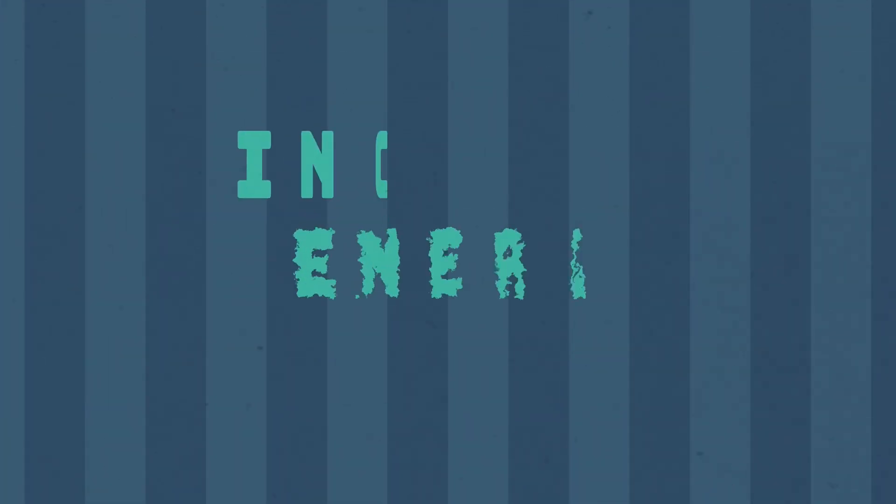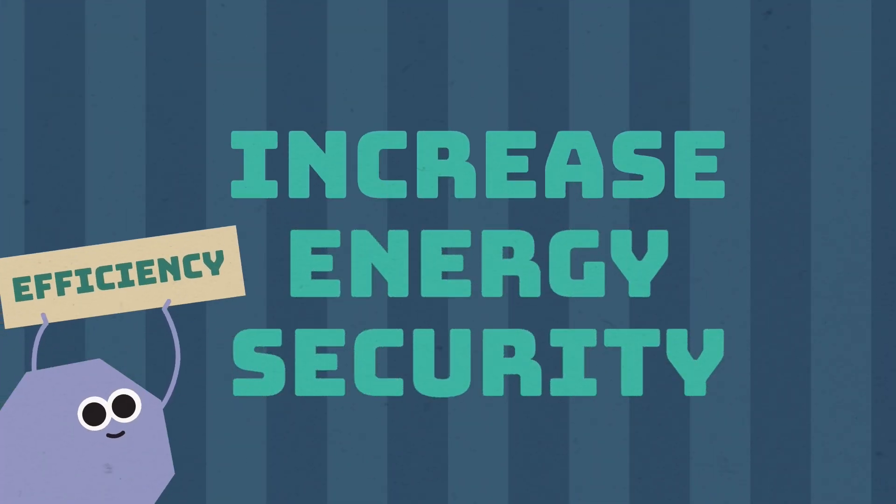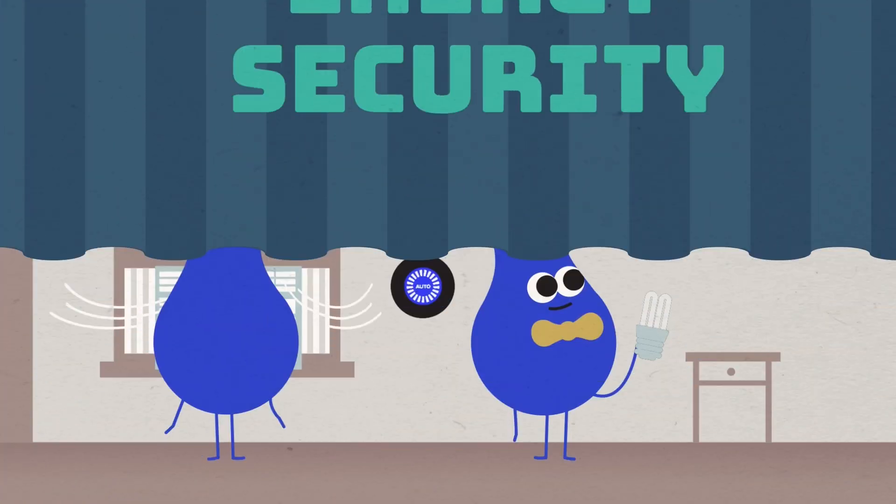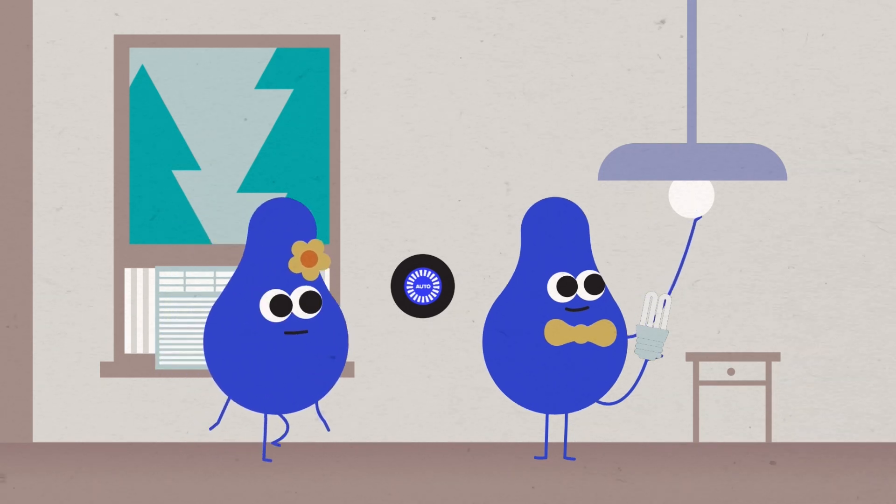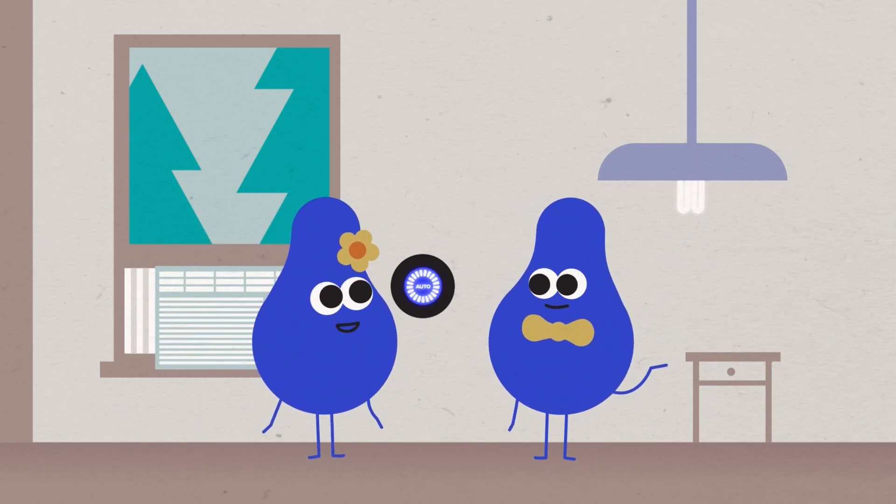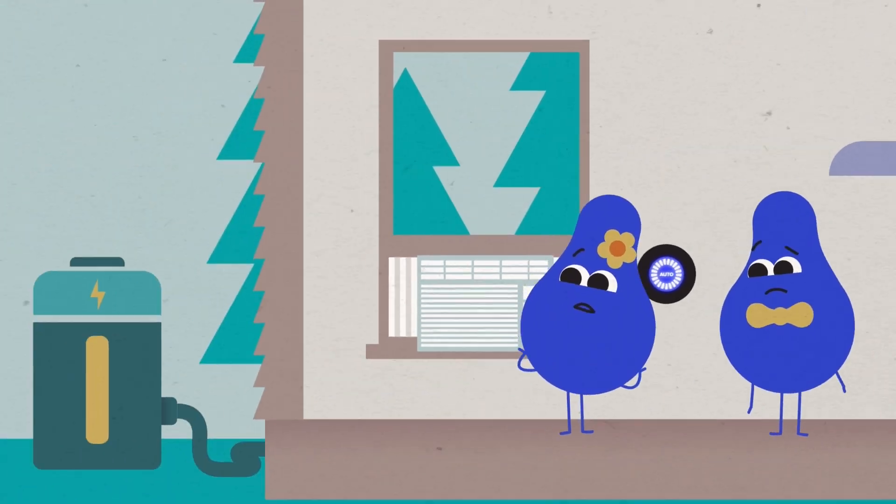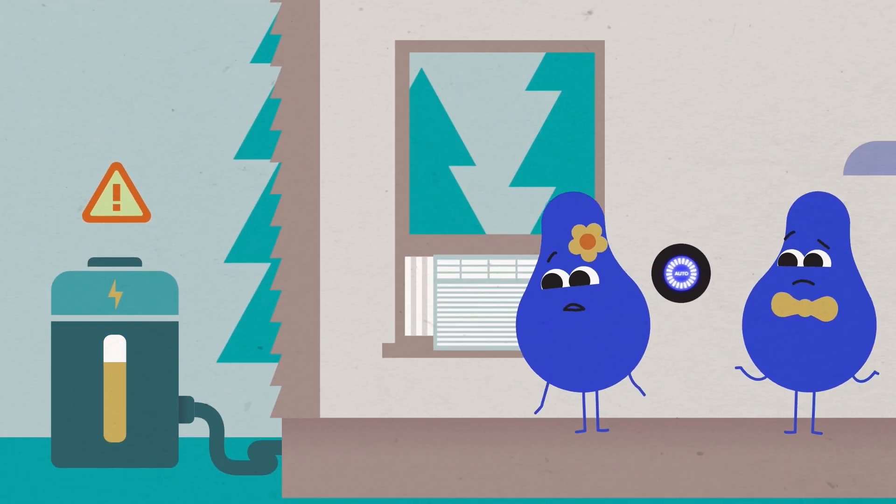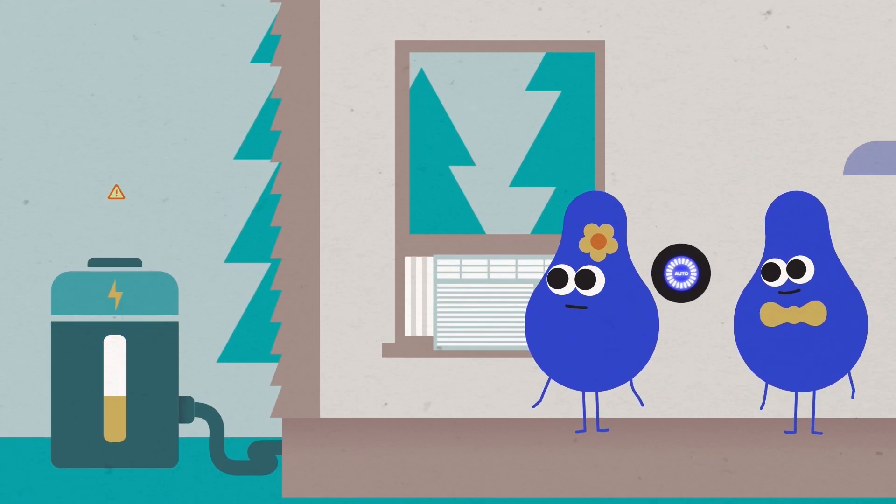Countries can also increase energy security by increasing their energy efficiency. They can rely on technology and change behaviors so that people consume less energy to do the same things. Then, if the supply of energy decreases, their lives would be disrupted to a lesser degree.